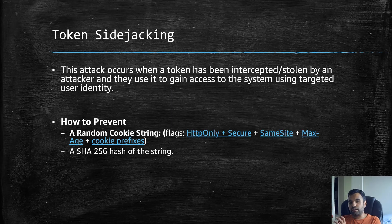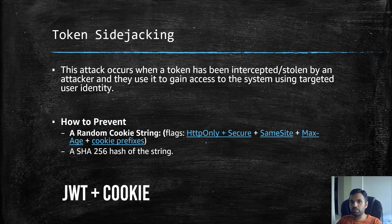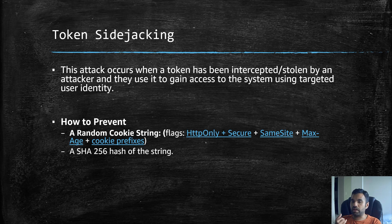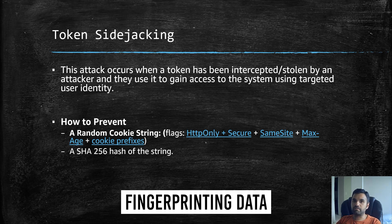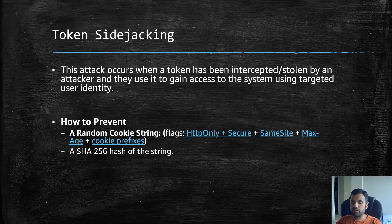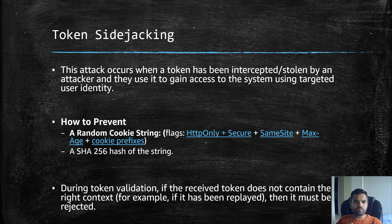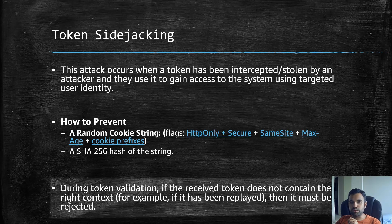In addition to the JWT, if you also pass this cookie value, the attacker's life becomes more difficult. You can add fingerprinting data and user context to these cookies — personalizing the cookie as much as possible — which helps prevent CSRF and sidejacking-type attacks.